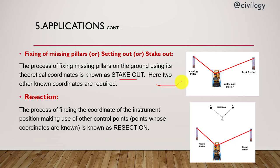You can see in the picture the missing pillar can be found with the known other two points. Resection means finding instrument's position with reference to other known points. Here A and B are known points, and from these two points finding the instrument's position is known as resection.